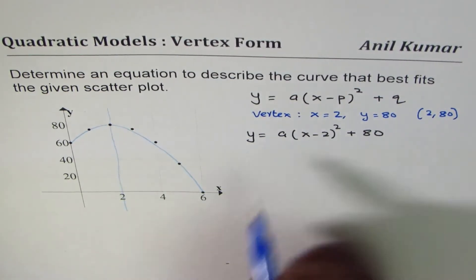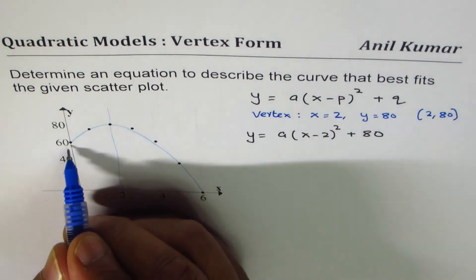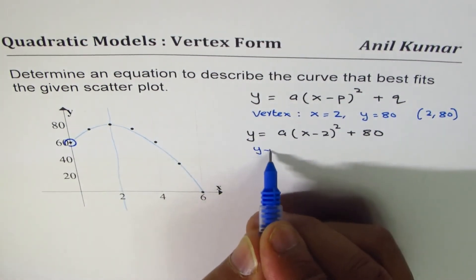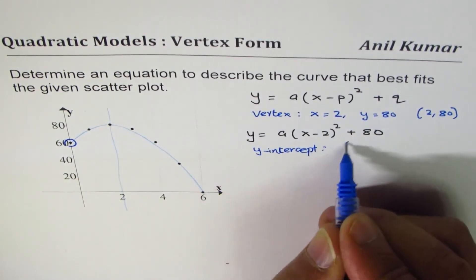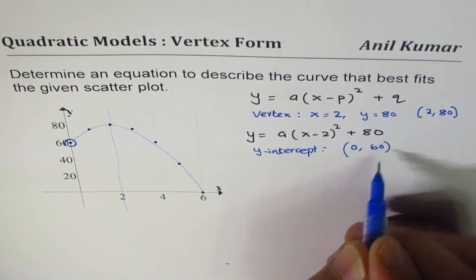To find the value of a, we could use any of the given points. However, the best point is the y-intercept itself. So we know y-intercept is given to us as (0, 60). So at x equals to 0, y is 60.